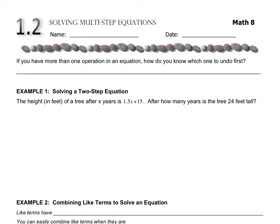In this lesson, we have multiple steps. We have more than one operation. And if you have more than one operation in an equation, how do you know which one to undo first?